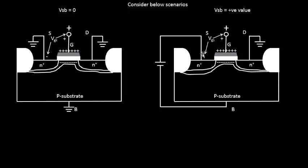Why is it a positive value? If you look from one direction you see VSB becomes positive, and if you look in the other direction VSB will become negative. So let's be on the same page and call VSB as some positive value — meaning your source is at positive potential and your body is at negative potential.